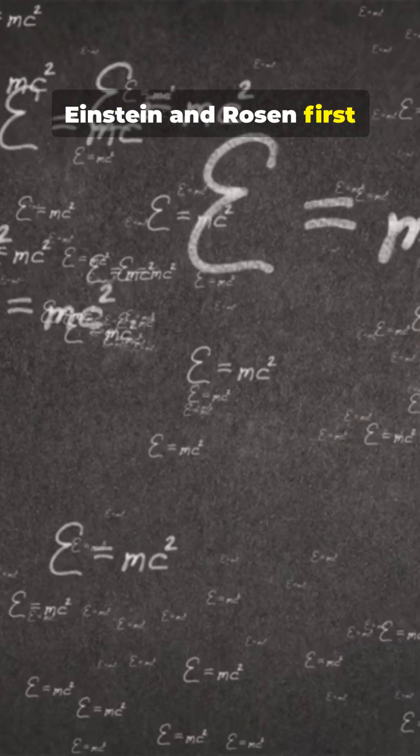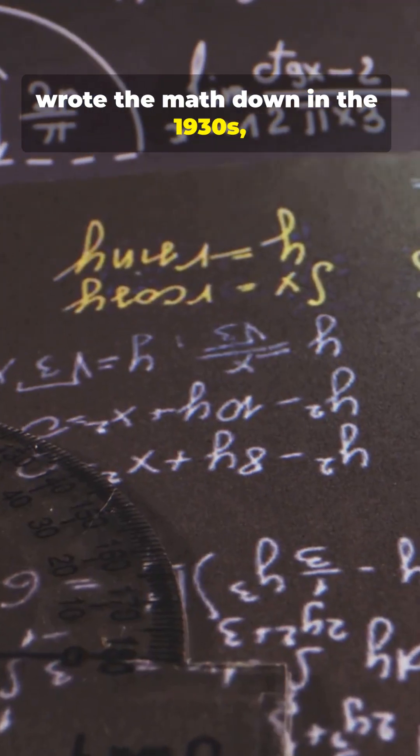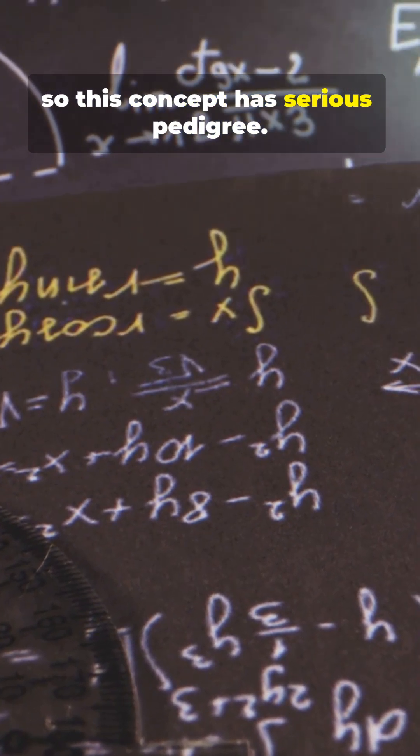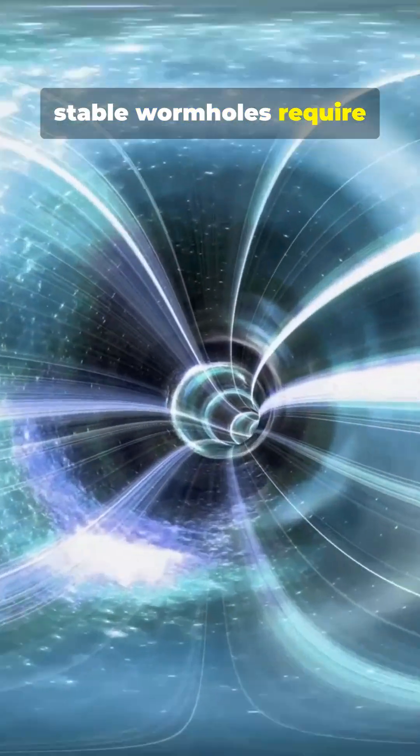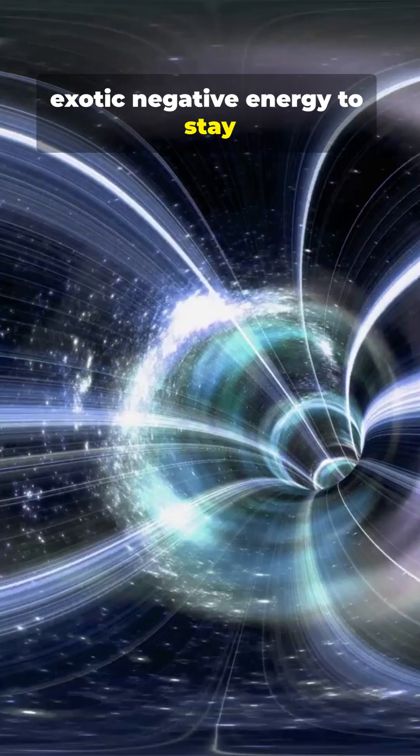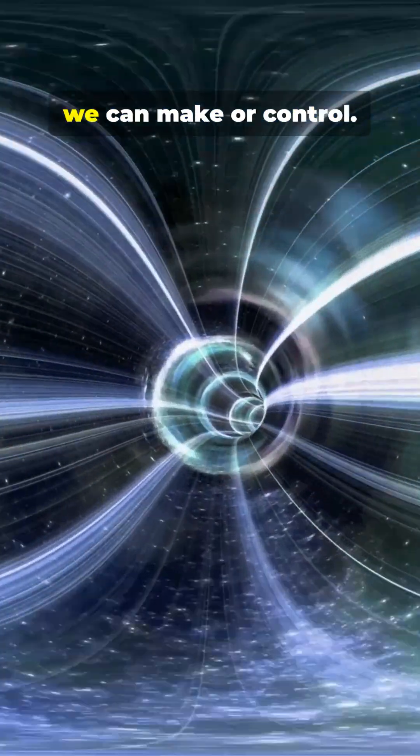Einstein and Rosen first wrote the math down in the 1930s, so this concept has serious pedigree. But here's the myth bust: real, stable wormholes require exotic negative energy to stay open—stuff we haven't proven we can make or control.